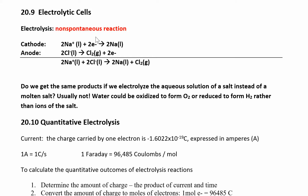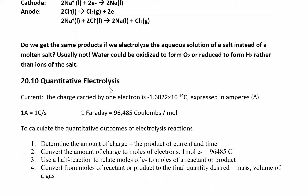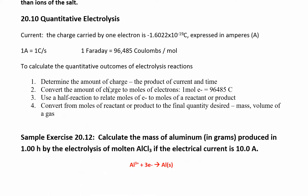Electrolysis involves non-spontaneous reactions. Mostly what we're going to look at is quantitative electrolysis — using stoichiometry and unit conversions to figure out how long it would take to make a certain amount of some solid from a salt. When talking about current, one amp is one coulomb per second. If you've taken physics you've probably seen these units; there's a lot of overlap between certain topics.